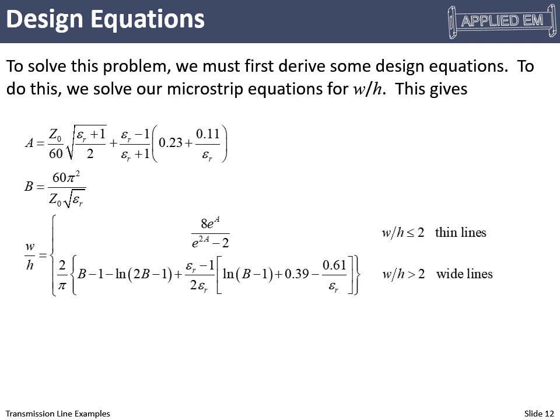The first thing we need to do is take that equation we had for calculating the characteristic impedance and turn it around and solve for W over H. Here's how we can do that. We can calculate these intermediate parameters A and B, which have no physical meaning. They just make these equations easier to calculate. So if we have thin lines, we use this equation to calculate W over H. That would give us the characteristic impedance we want. And by the way, the characteristic impedance we want appears right here in our calculations for A and B. And so for a wide line, we have this other more complicated equation.